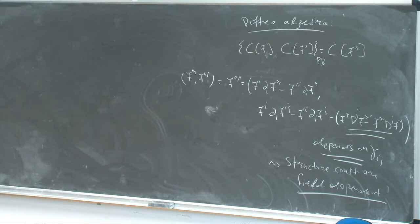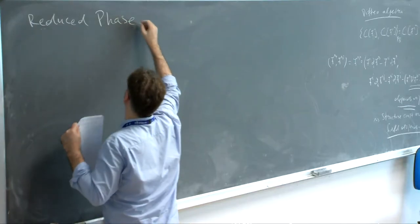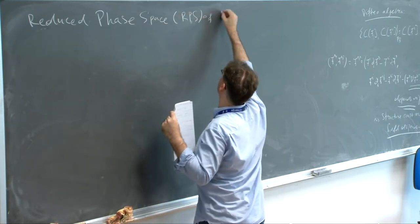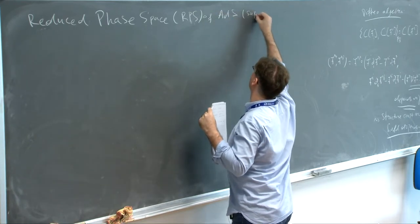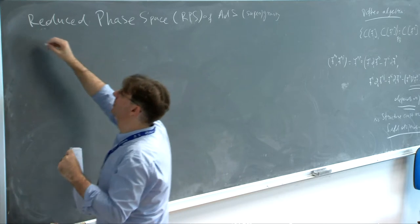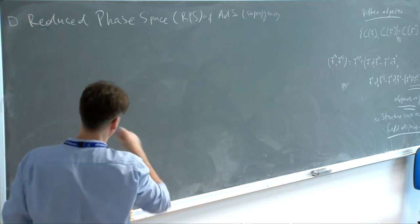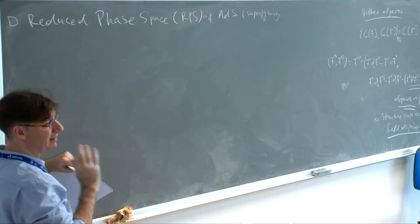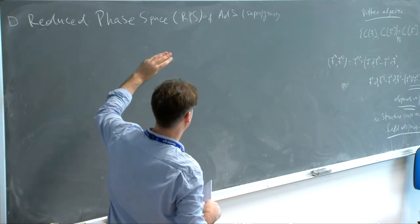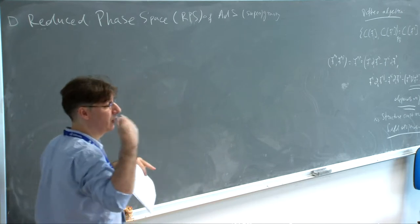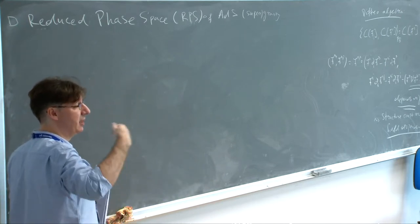Now let's discuss this reduced phase space. I will only go to the gravity part here, but you can extend the whole thing. What I want to discuss first is the structure of the general asymptotic solutions. Asymptotically AdS spaces have a conformal boundary, and you can construct the general asymptotic solutions of the equations of motion in the vicinity of this boundary. There is a huge literature on that. One way to do it is to pick a gauge.